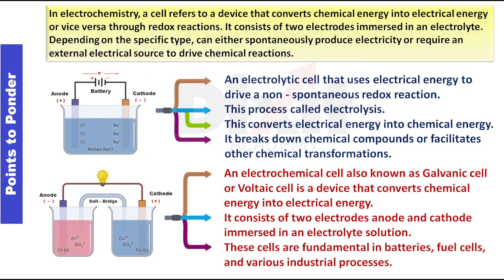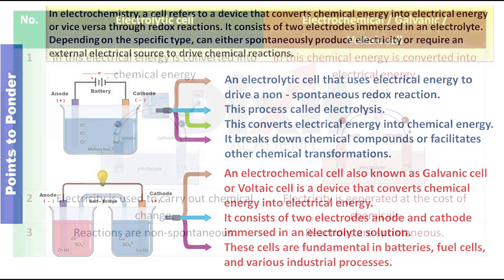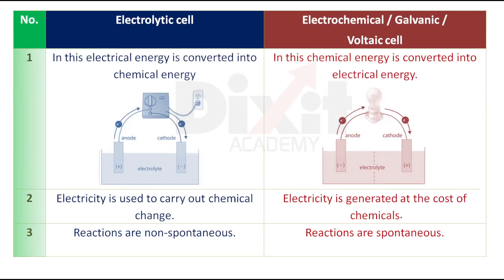Following is the distinction between electrolytic cell and electrochemical cell. Point one: In an electrolytic cell, electrical energy is converted into chemical energy. In an electrochemical or galvanic cell, chemical energy is converted into electrical energy.